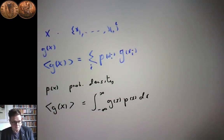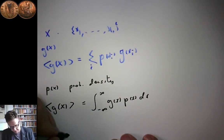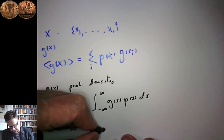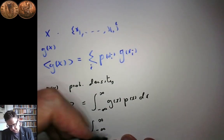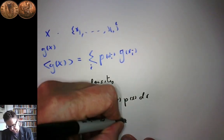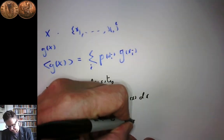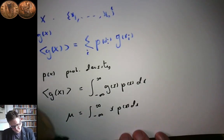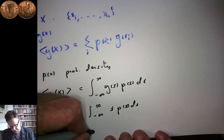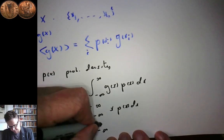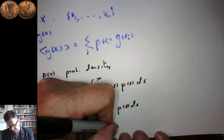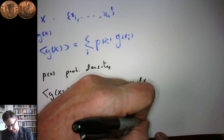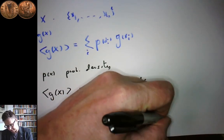That allows us to say that mu is equal to the integral from minus infinity to infinity of x times p(x) dx. And sigma squared will be the integral from minus infinity to infinity of (x minus mu) squared times p(x) dx.